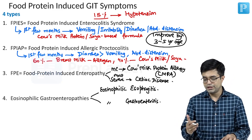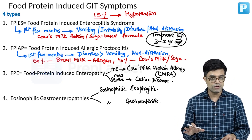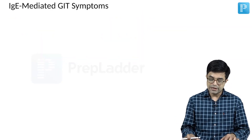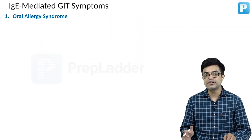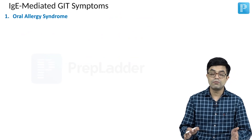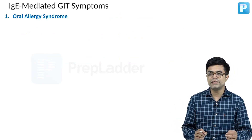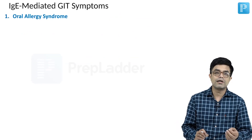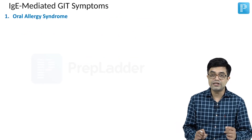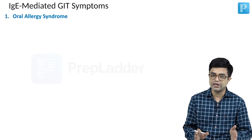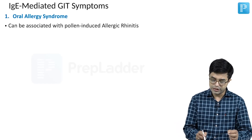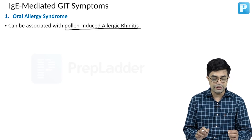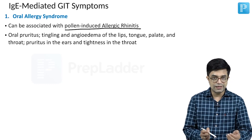These are the four types of food protein induced GI symptoms to remember. Then we have IgE mediated GI symptoms, the prototype of which is the oral allergy syndrome. Oral allergy syndrome-like manifestations can be seen with animal proteins, but more commonly vegetable products and fruits are implicated in children. Many patients with oral allergy syndrome are also associated with pollen-induced allergic rhinitis. Whenever these children develop allergy, they will have manifestations.